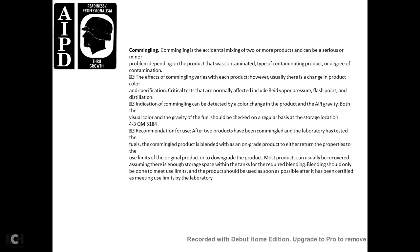Commingling is the accidental mixing of two or more products. Effects can be serious or minor depending on the product contaminated, the type of contaminating product, and the degree of contamination. Usually there is a change in product color and specification critical test results. Tests normally affected include the Reid vapor pressure, flash point, and distillation. Commingling can be detected by changes in product color and API gravity. Recommendation: after commingling, test the blended product; if it meets the easing limits of the original product grade, it may be downgraded. Most products can be recovered assuming enough storage space is available for blending.